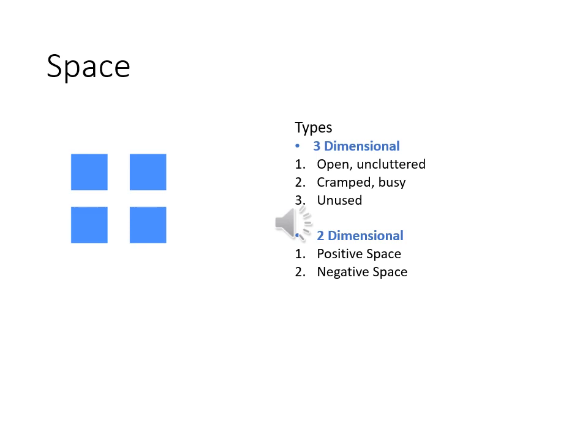Three-dimensional space is of three types: open or uncluttered space, where there is an extreme amount of free space and one can move freely; cramped or busy space, defined by food courts in a mall or very crowded stations; and unused spaces — certain buildings or shops that are absolutely unused.